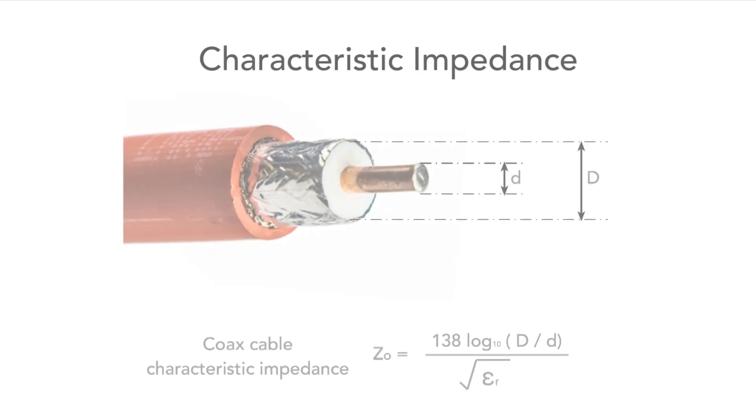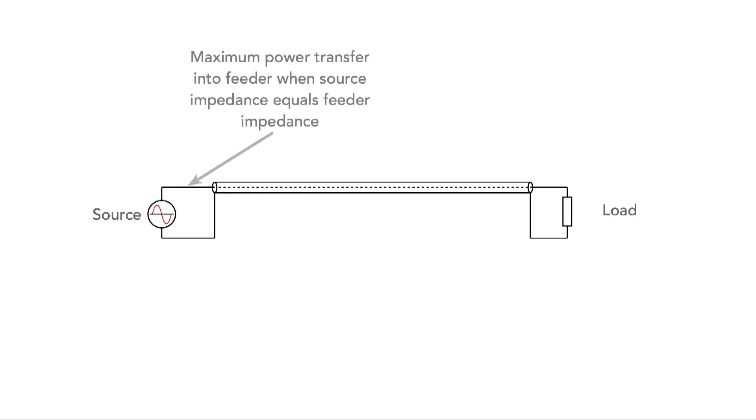These feeders are said to have a characteristic impedance and the maximum power transfer occurs when the feeder transfers power to a load having the same impedance as itself. Similarly the maximum power transfer into the feeder occurs when the source has the same impedance.